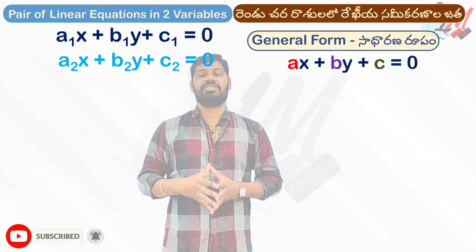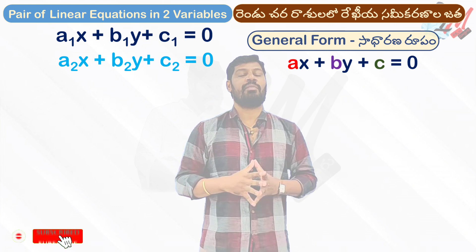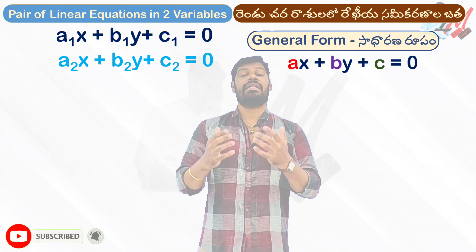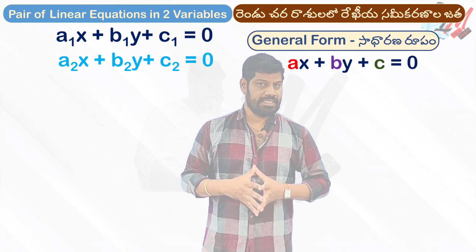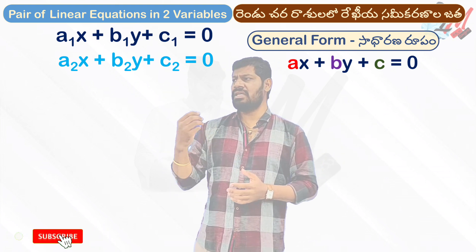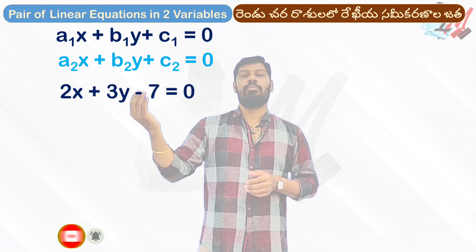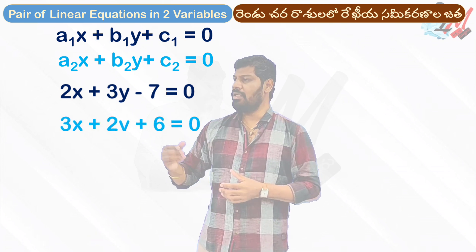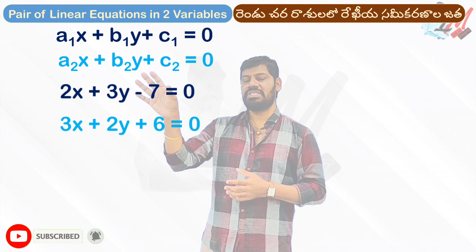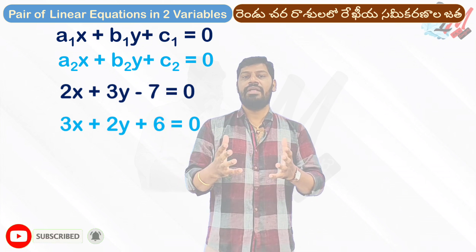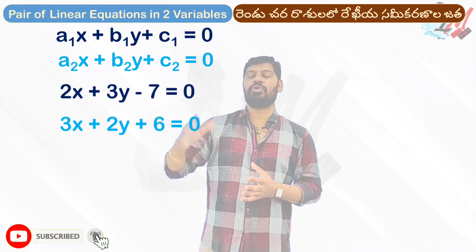If we have any equations, we have to observe them carefully. I have a small example: 2x plus 3y minus 7 equal to 0, and 3x plus 2y plus 6 equal to 0. We have a pair of linear equations here.